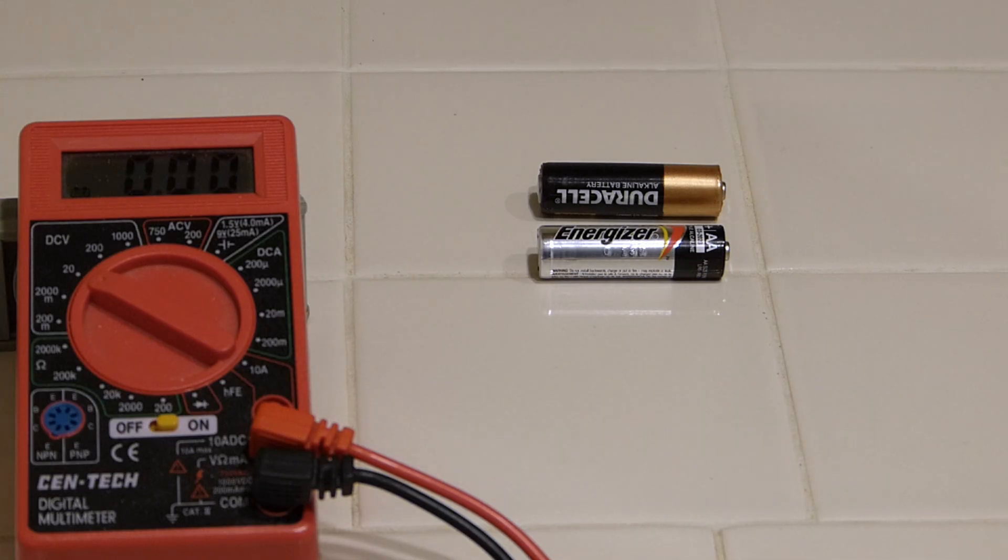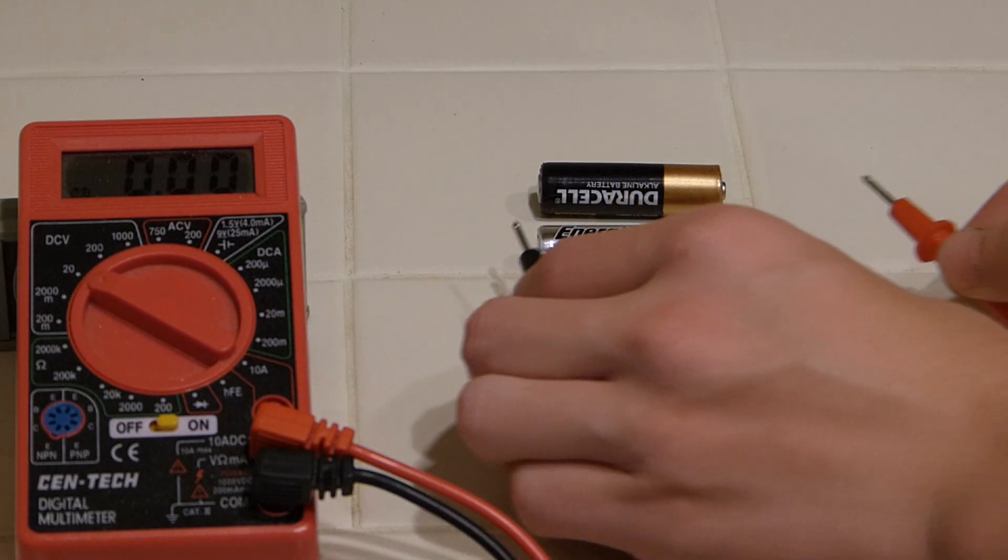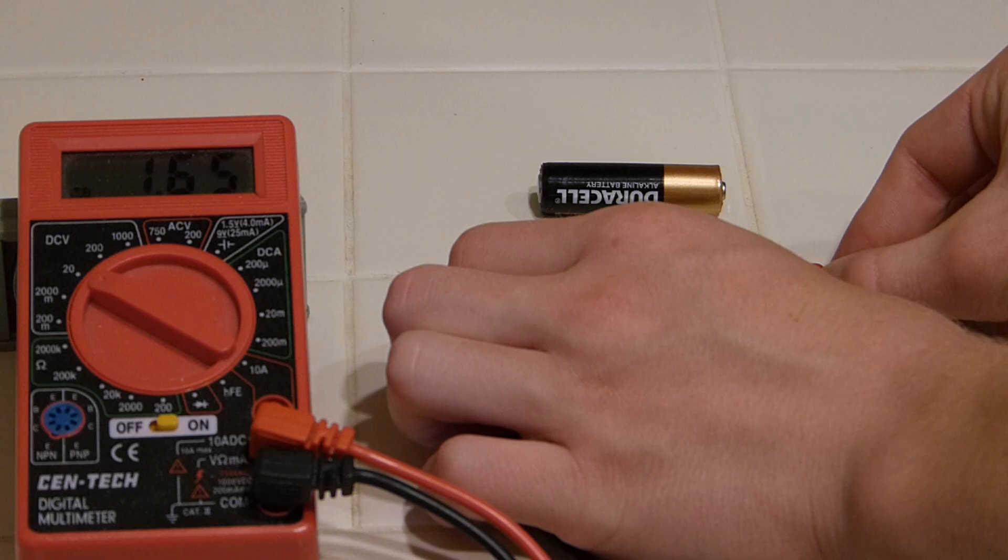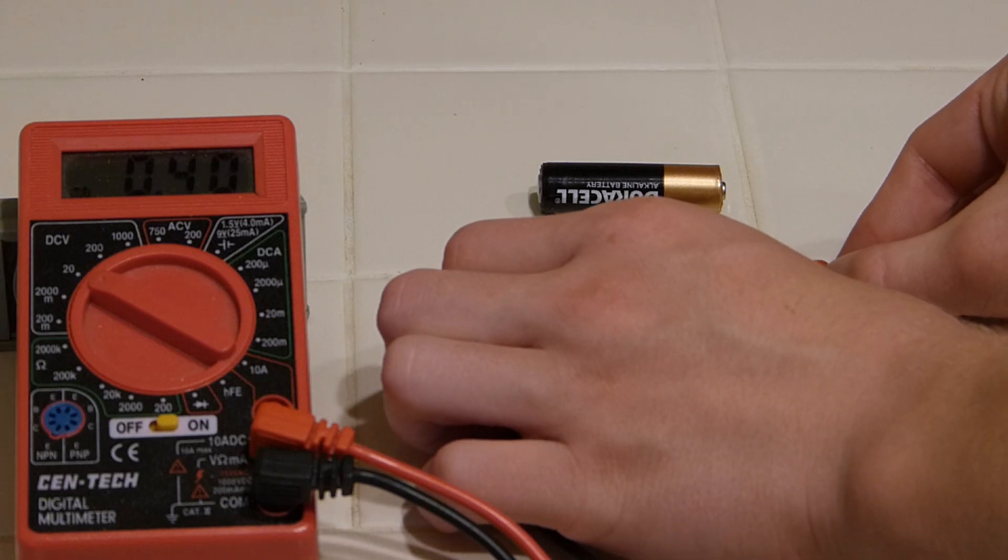Here are two batteries. The Energizer is good. Alkaline batteries are rated for 1.5 volts. So this one is brand new, it's showing 1.65, that's excellent.